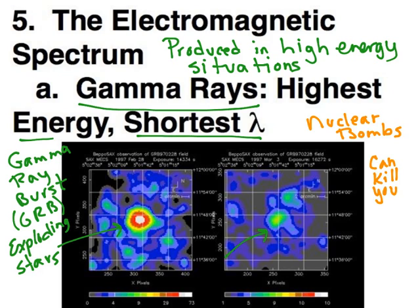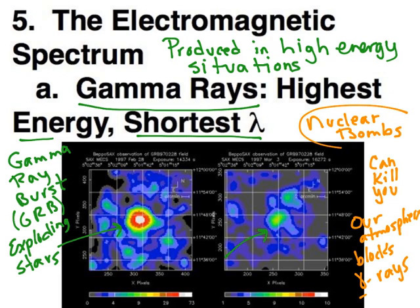Now fortunately, our atmosphere blocks gamma rays from outside of the Earth. I'm going to use the Greek symbol for gamma for gamma rays. So we don't have to worry about gamma rays attacking us from outer space.